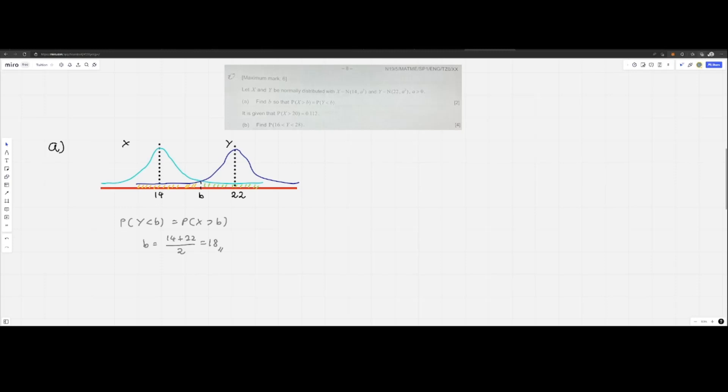For the second part of the question, it's advisable to do a quick sketch of the diagram. Based on this sketch, we can see that for the X normal distribution, the portion above 20 has probability 0.112, and we are requested to find the probability of Y between 16 and 28.